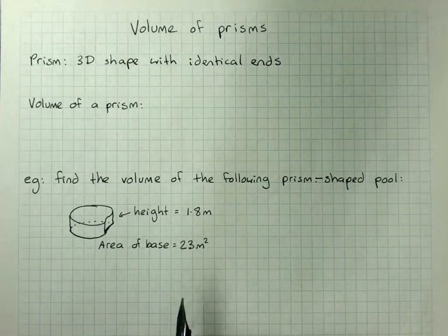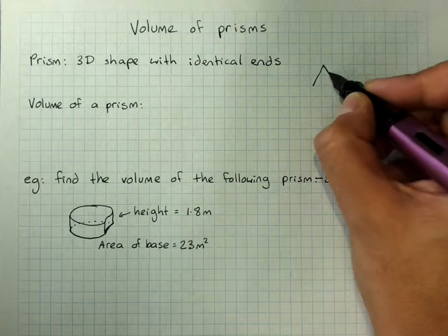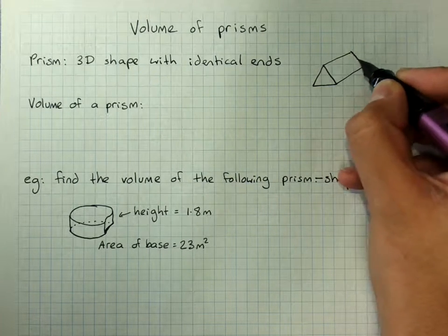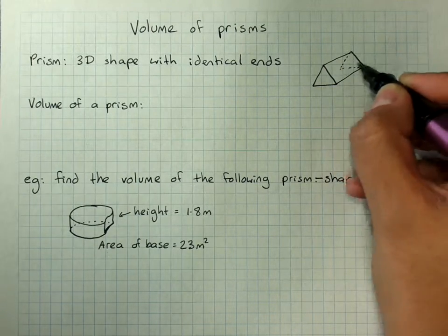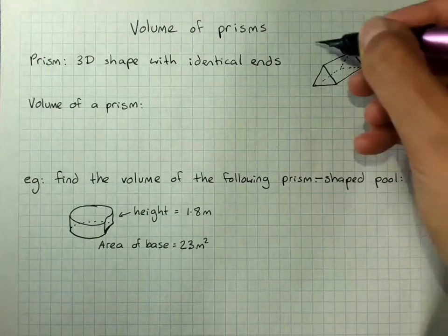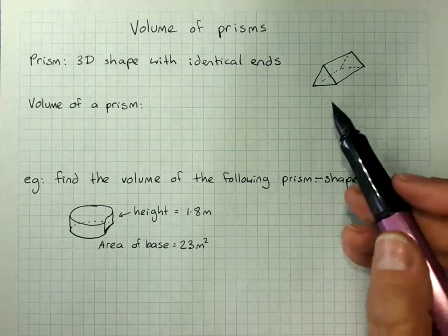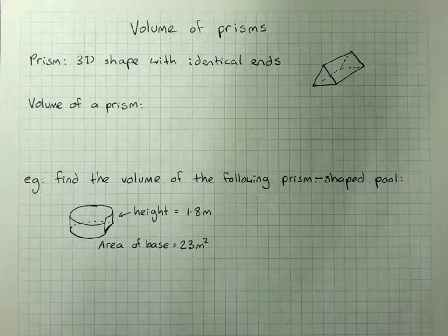And we say it's got the same cross-section throughout, so I'll draw a triangular prism here. A triangular prism would be like a Toblerone box. There's an identical triangle at either end, and if you cut along there anywhere, you'd get a triangle. So that's called the cross-section, that's the end. So a 3D shape with identical ends.